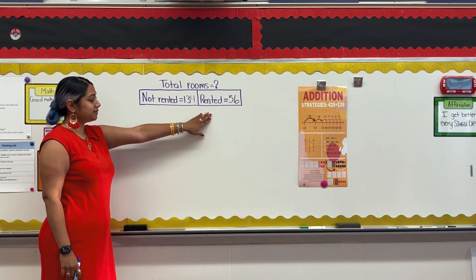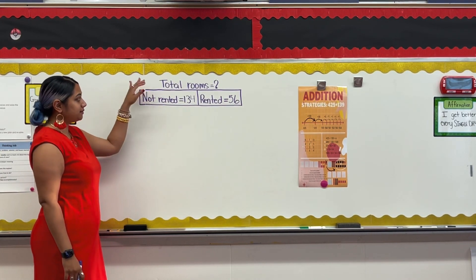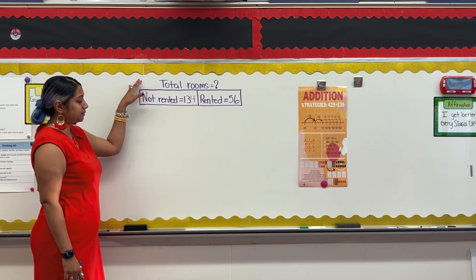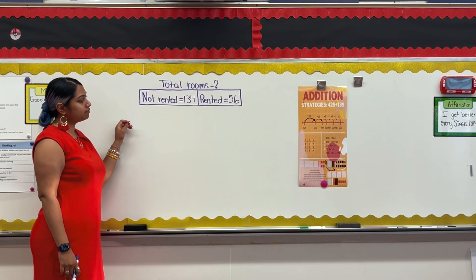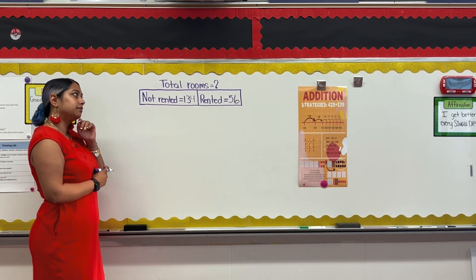I know that we're combining the two amounts, and when we combine two amounts to find a total, that means we need to use addition to find the answer to this word problem. Now I can write a number sentence to represent the problem I'm trying to solve.